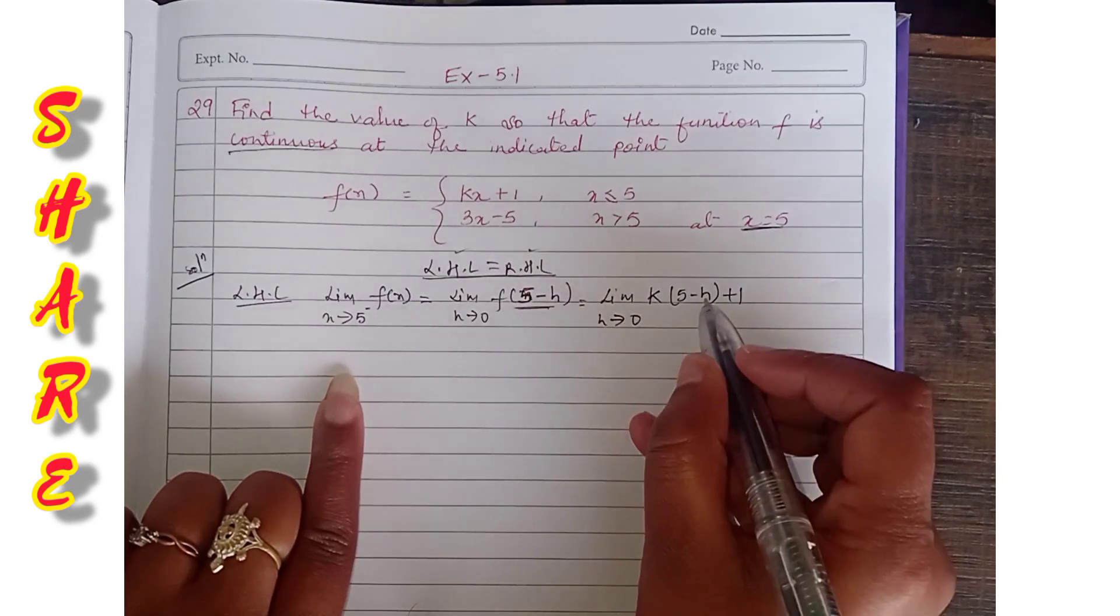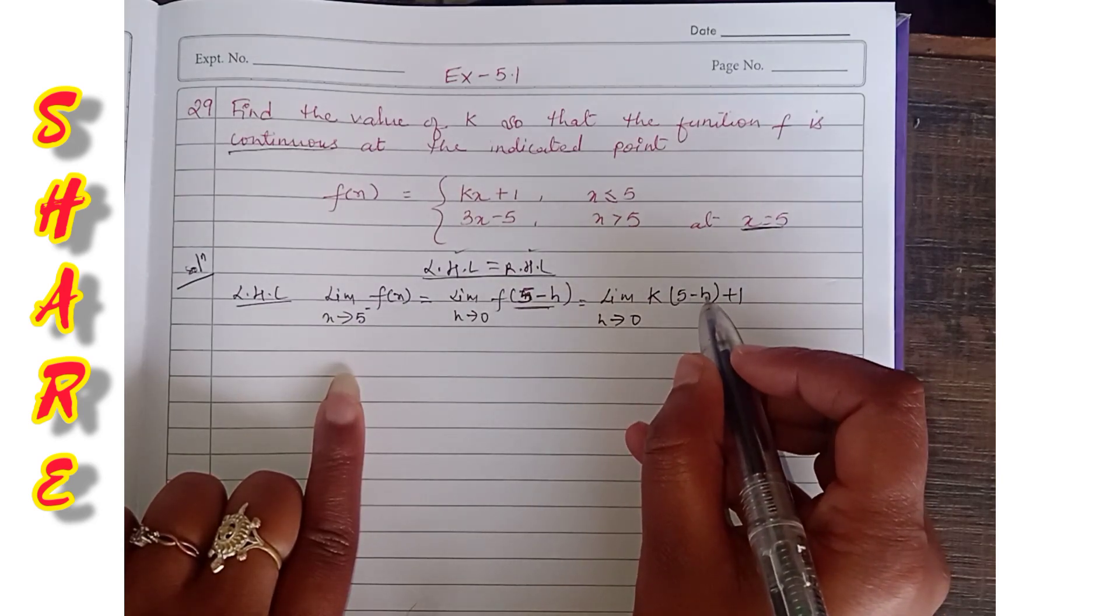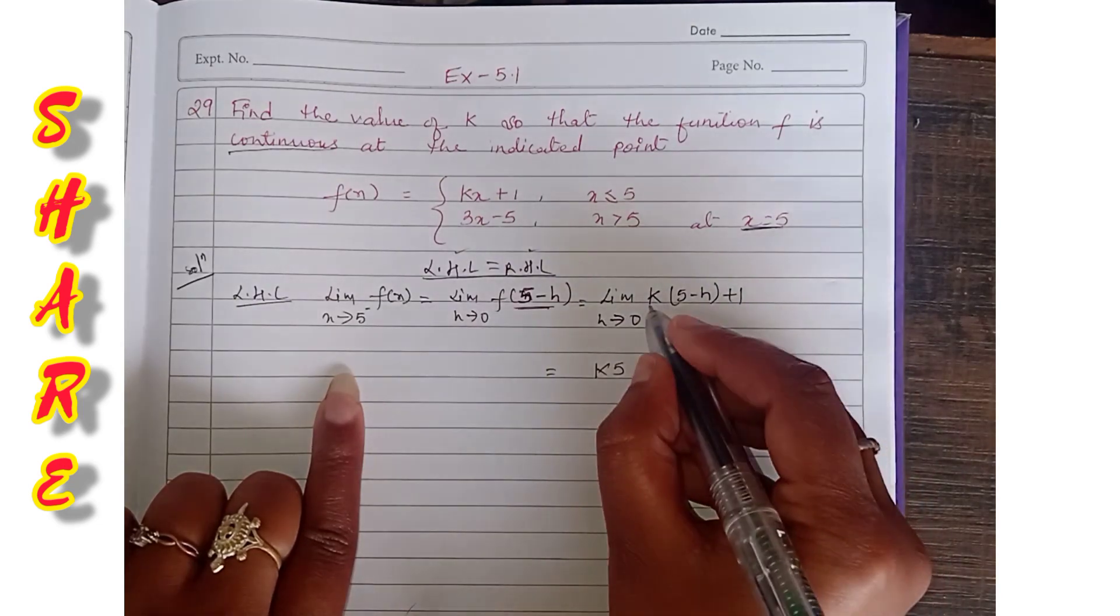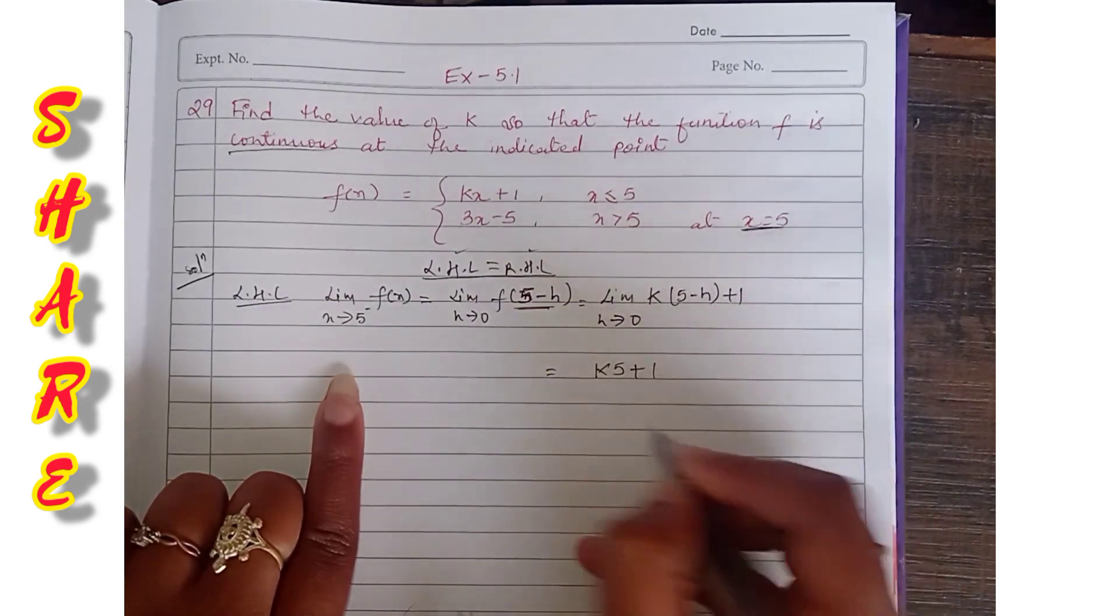So here, what will be? K times 5 plus 1. Left hand limit is this.